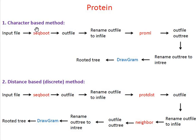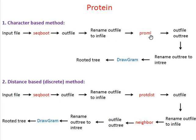There are similar steps followed for a protein sequence. In this case you have different programs: you'll use SeqBoot and ProML programs under the character-based method. The input file in text form or PHYLIP input file format is given to SeqBoot, which gives you an outfile. Rename this outfile as 'infile,' and this infile is taken by ProML, which gives you outfile and outtree. Rename the outtree as 'intree,' give it to DrawGram, and you'll obtain a rooted tree.